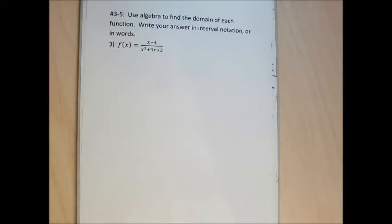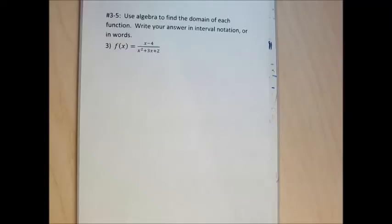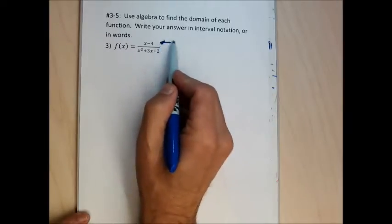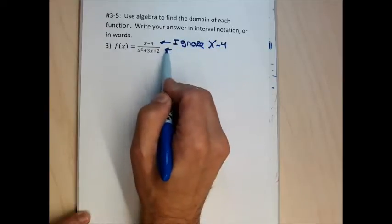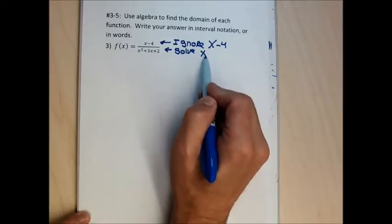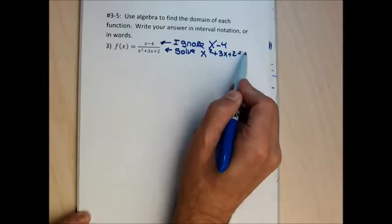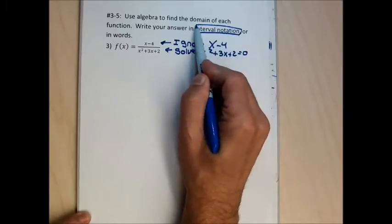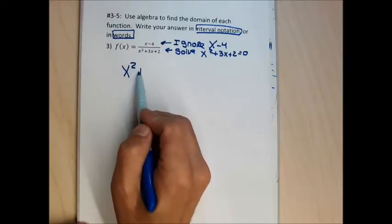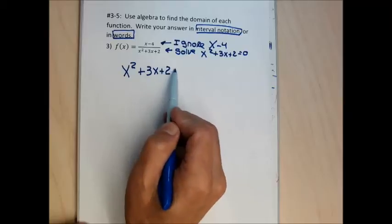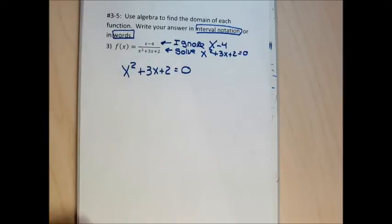For question 3, it gives a fraction and asks me to find the domain in interval notation or words. When finding the domain of a fraction, you ignore the numerator — so I ignore the x minus 4. I set the denominator x squared plus 3x plus 2 equal to zero and solve for x. The algebra gives me the key numbers for the domain — the numbers to exclude — but doesn't directly give the domain itself.